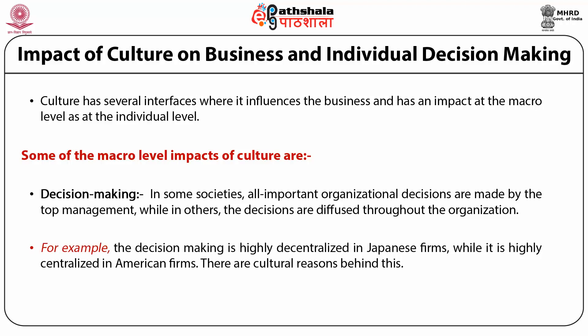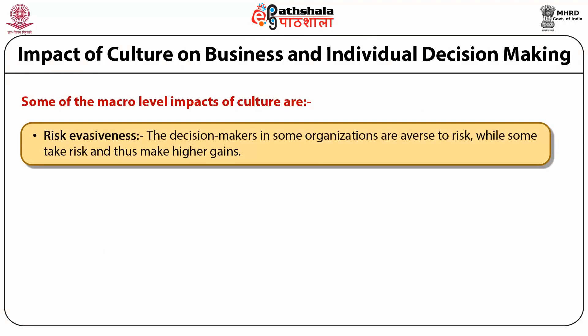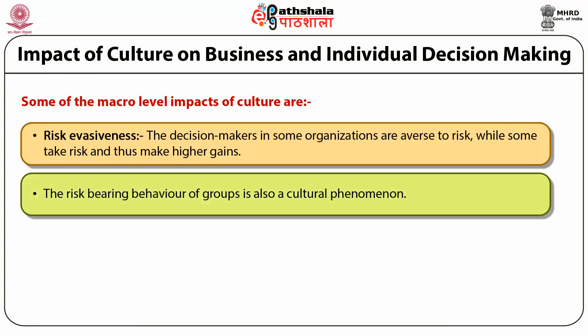For example, decision making is highly decentralized in Japanese firms, while it is highly centralized in American firms. There are cultural reasons behind this. Risk evasiveness: decision makers in some organizations are averse to risk, while some take risks and thus make higher gains. The risk-bearing behavior of groups is also a cultural phenomenon.